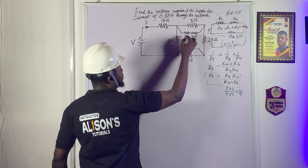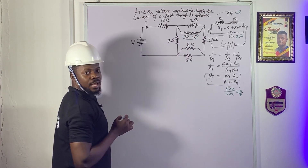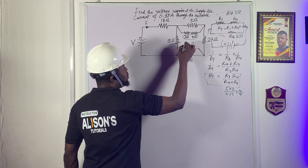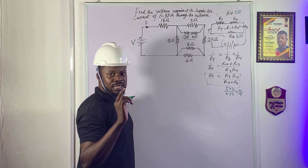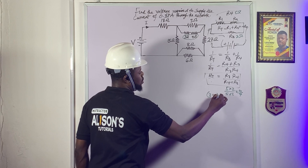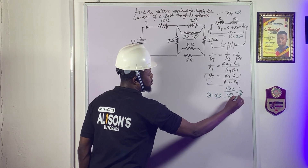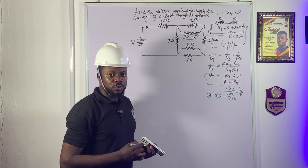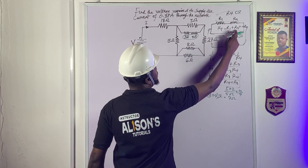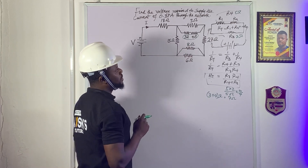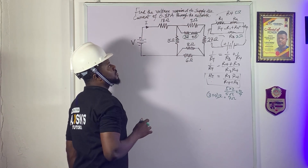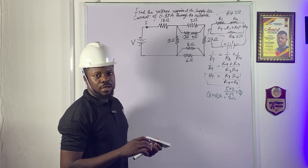Notice that these two resistors — this one and this one — are in series. The total resistance connected in series: 3 ohms + 4 ohms = 7 ohms. I've already given you the formula — for resistors in series, you just add them. So that combination gives us 7 ohms.